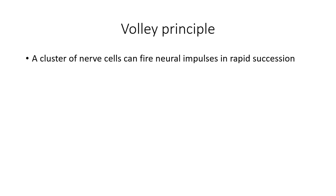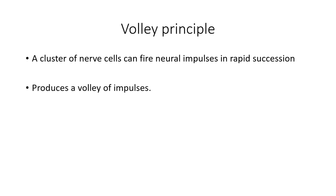The same neuron may repeatedly produce receptor potentials, and through summation of these receptor potentials, an action potential is generated that can travel through the afferent nerve. This rapid successive firing is called the volley — like bullets firing from a gun in rapid succession, the nerves fire successively.